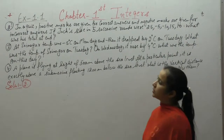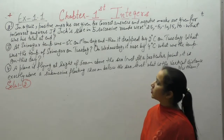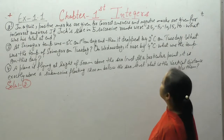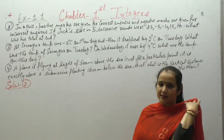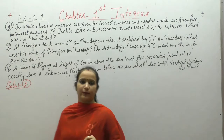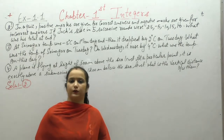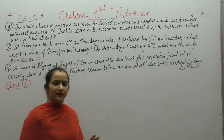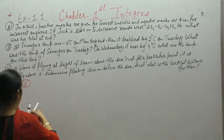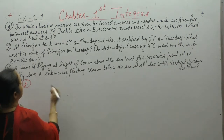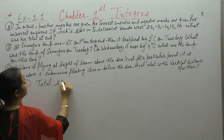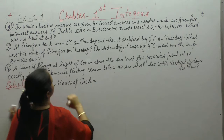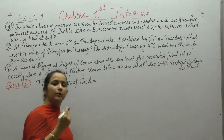Next question, question number 2. In a quiz, positive marks are given for correct answers and negative marks are given for incorrect answers. If Jack's score in 5 successive rounds were given, what was his total at the end? To find the total score of Jack across 5 rounds, we will add all of them.